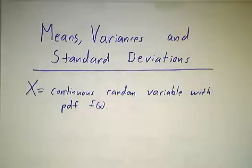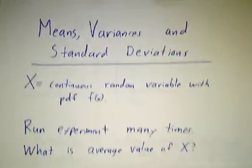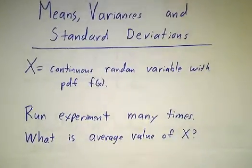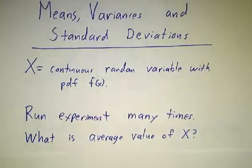So we're saying that x is a continuous random variable with a probability density function f of x, and you take a measurement of x, then you set up your equipment again and take another measurement of x, and you run the experiment a thousand times, taking a thousand independent measurements of x. In the long run, what's the average value that you're going to get?